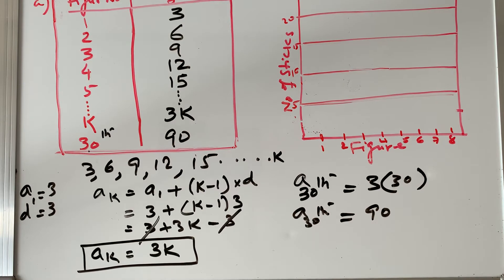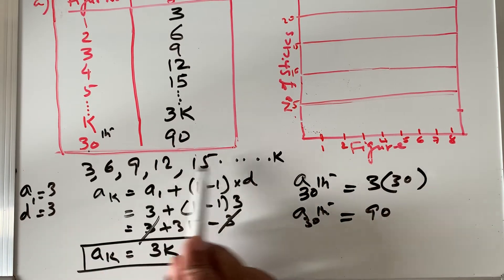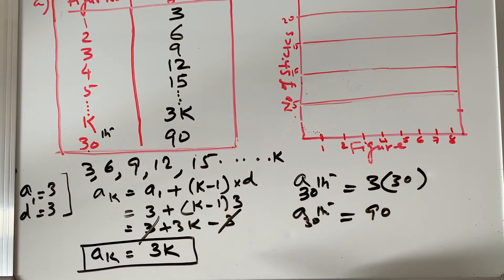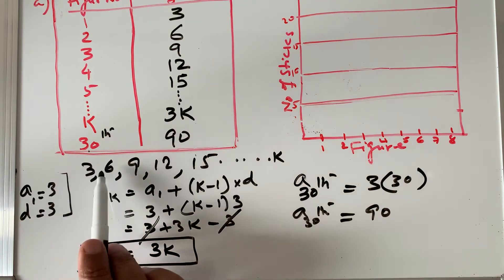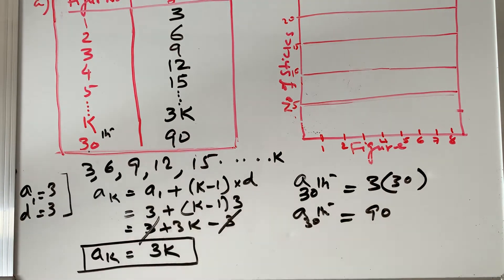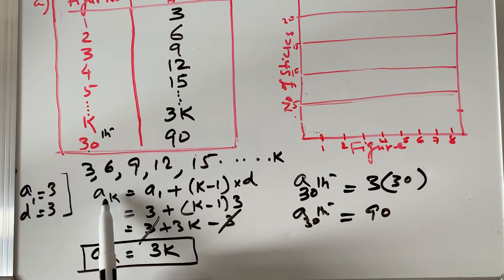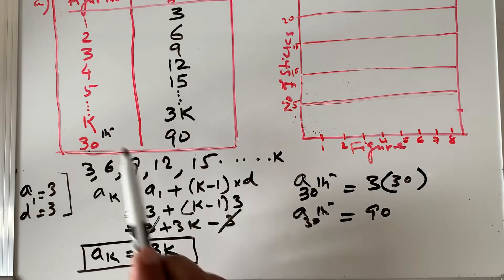Now we come to the second part: drawing the graph. We counted the number of sticks and made the number pattern 3, 6, 9, 12, 15. We then found an algebraic expression using the arithmetic sequence formula. The first term is 3 and the common difference is 3 — subtracting any consecutive terms gives the same value, so we apply the arithmetic sequence formula: ak equals a1 plus (k minus 1) times d.